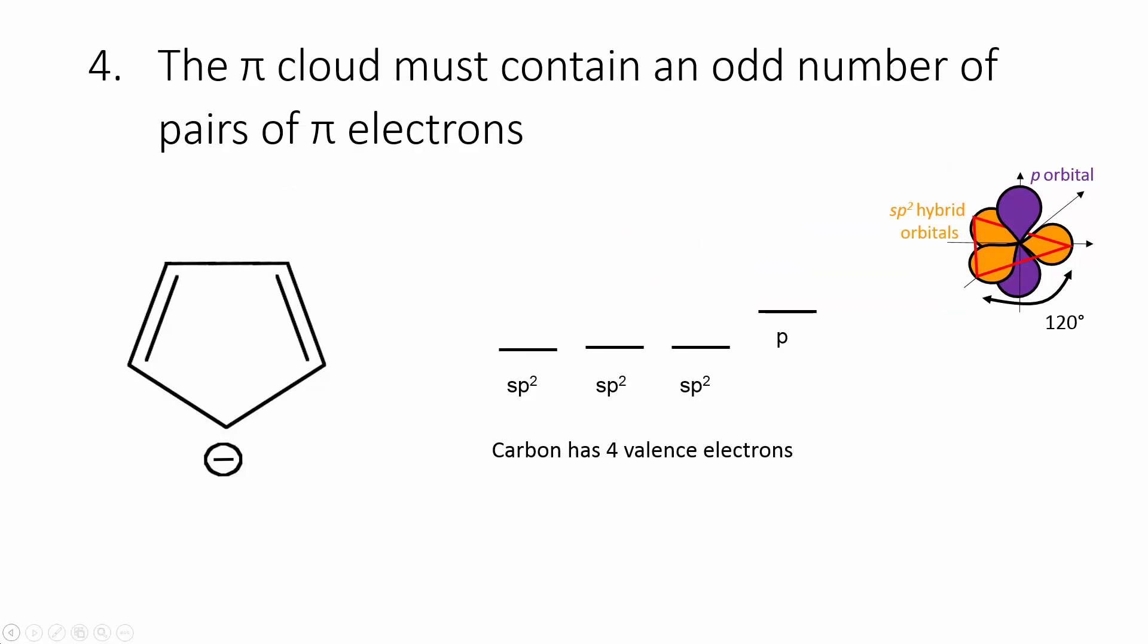Requirement number four: There must be an odd number of pairs of π electrons. In order to answer this, we need to count the number of π electrons. To determine this, we can start by distributing our electrons within carbon's orbitals.